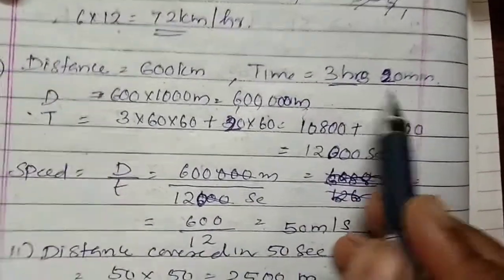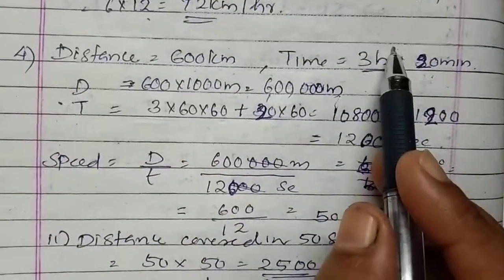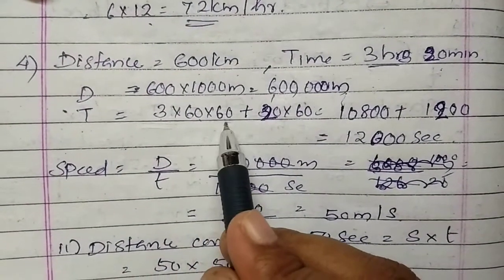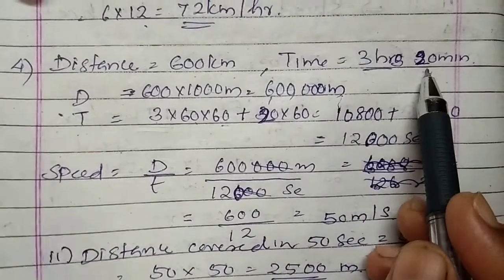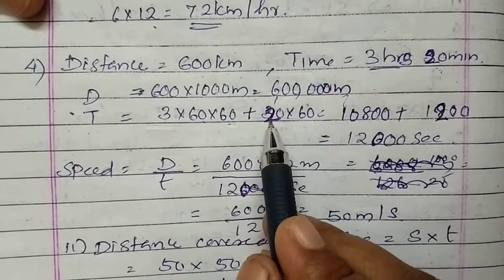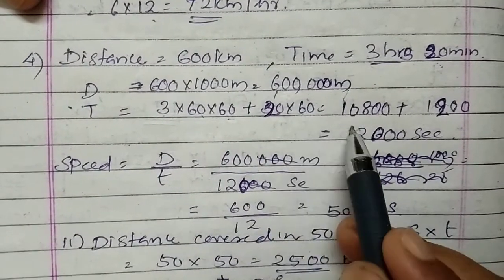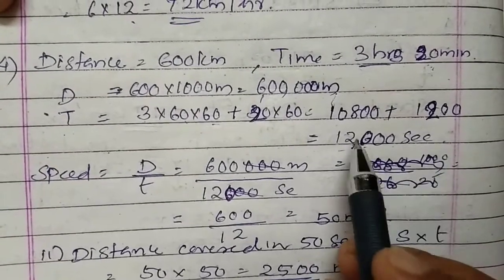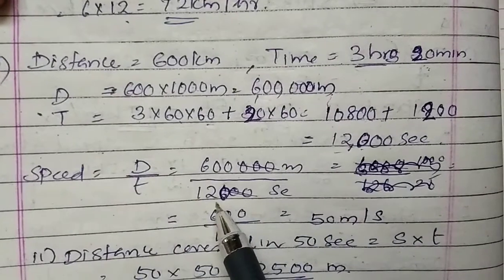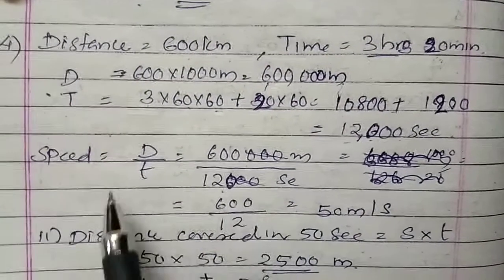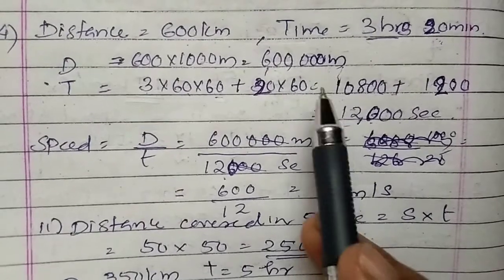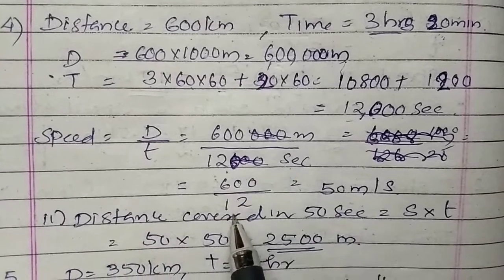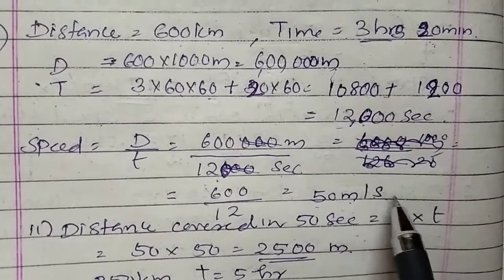Time is 3 hours 20 minutes. Convert to seconds: 3 hours × 60 × 60 gives 10,800 seconds, plus 20 minutes × 60 = 1,200 seconds, giving 12,000 seconds total. Speed equals total distance in meters divided by total time in seconds: 600,000 divided by 12,000. You can easily calculate 600 by 12 — we get 50 meters per second.